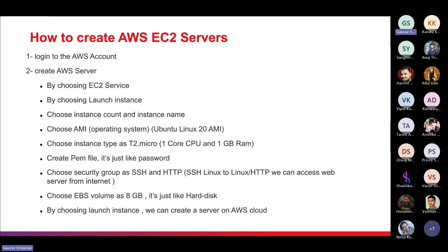After choosing the AMI, select the instance type. I selected T2 Micro because it is free under the trial version. Next, create a PEM file — this is like your password and is used to connect to the server. After that, select a security group enabling SSH and HTTP. SSH is used to communicate with Linux servers, and HTTP is used to access the server from the internet.